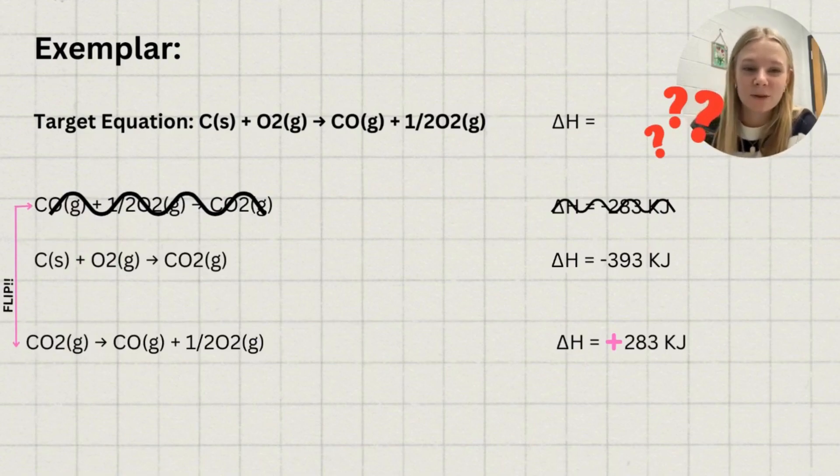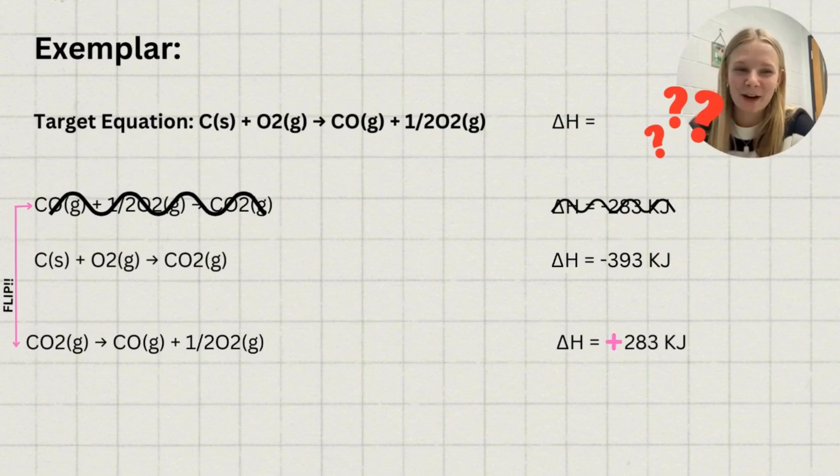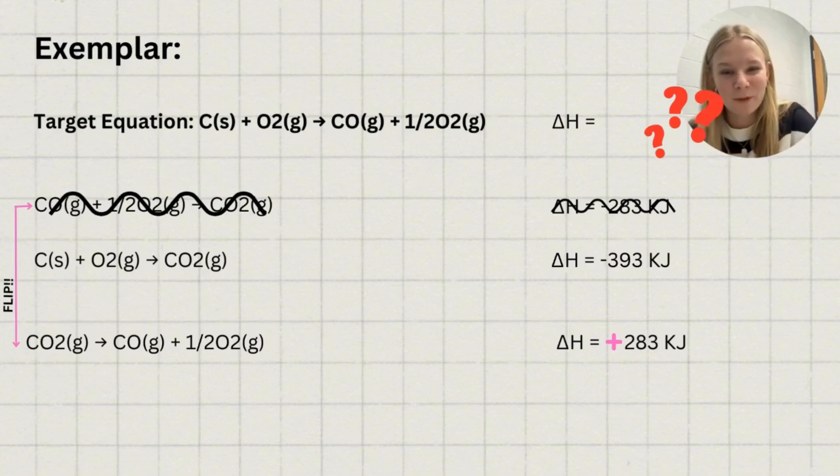Therefore, negative 283 kilojoules would be a positive 283 kilojoules. As you can see, carbon and oxygen gas in the second given equation is on the reactant side, so it does not need to be flipped. Now that the products and reactants are aligned properly with the target reaction, we can move on to the next step.